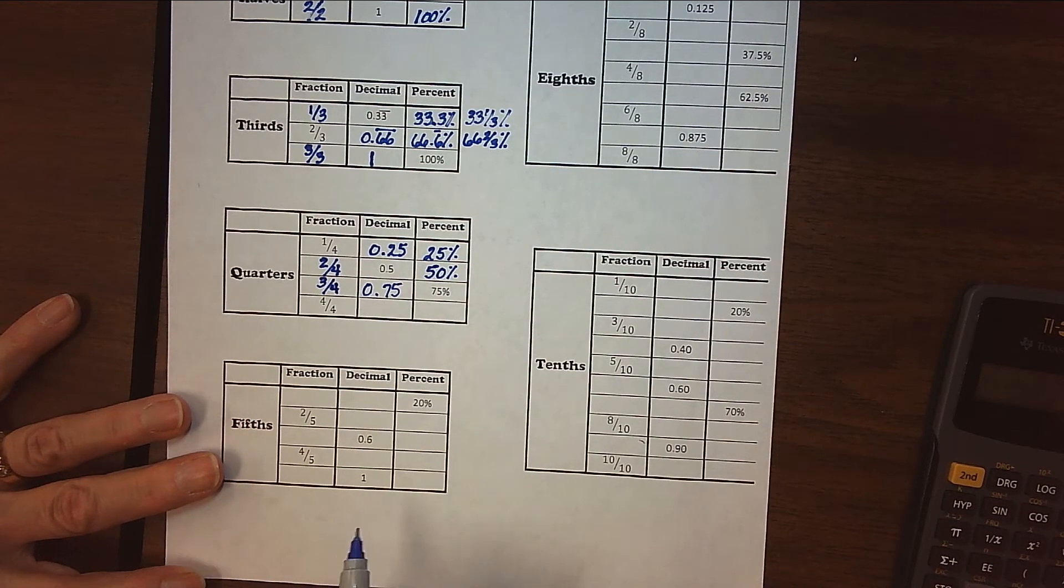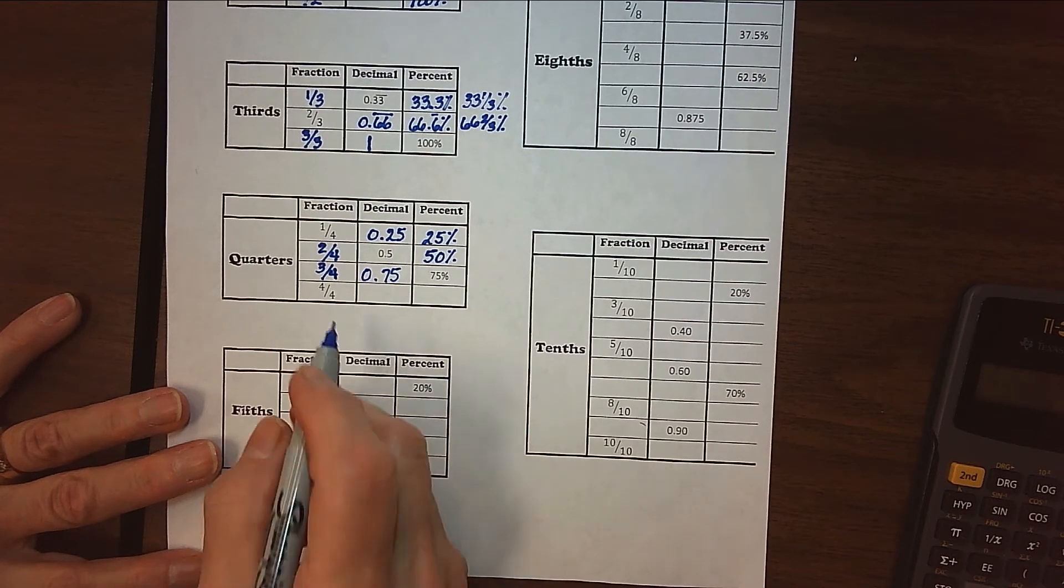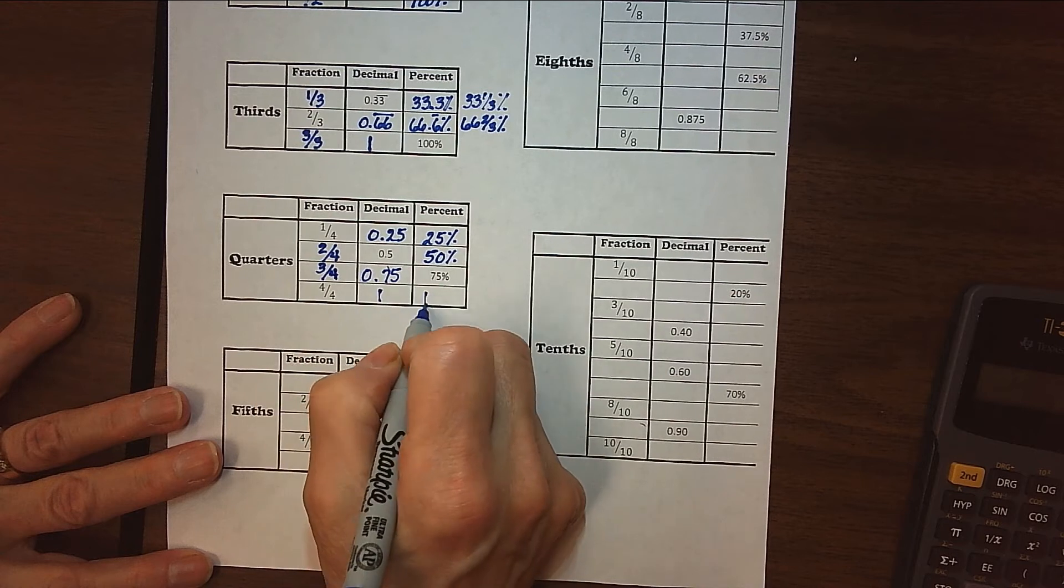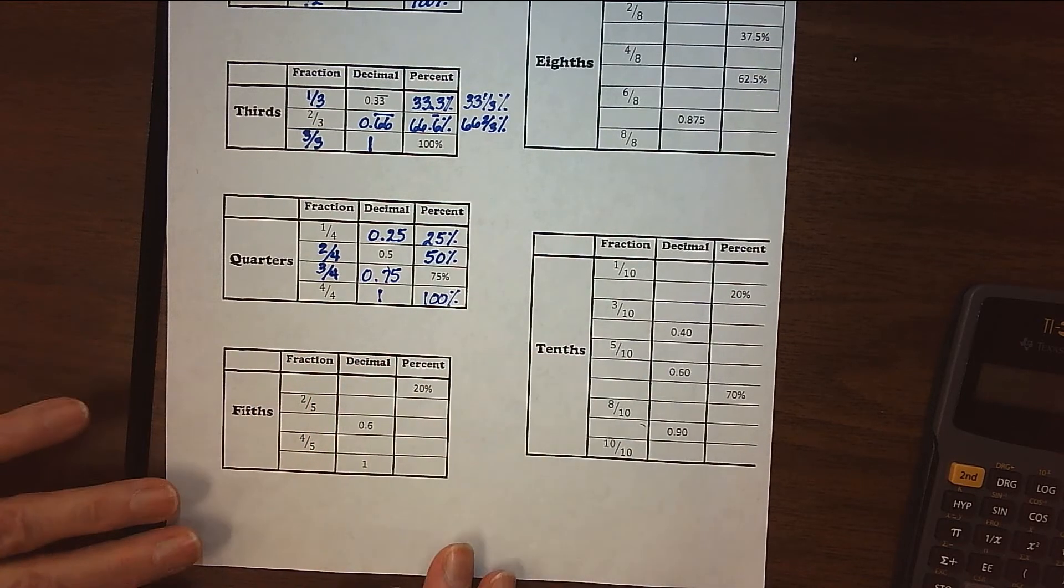Again, just a reminder, these are ones that we want to have memorized. So four out of four, of course, is one whole, which is 100%.